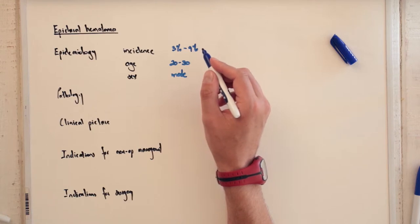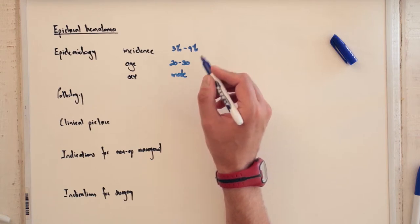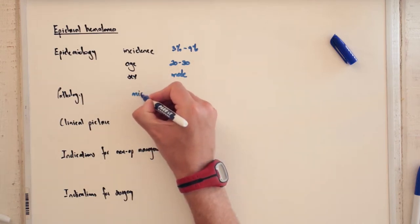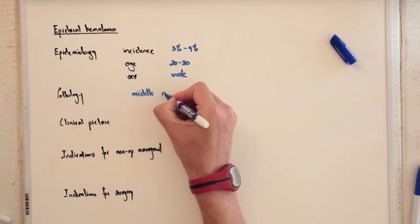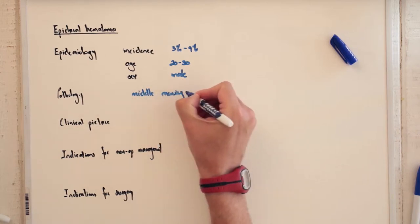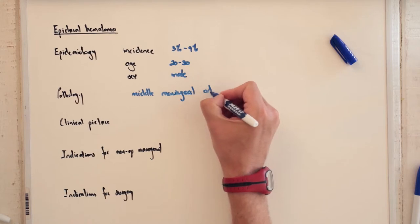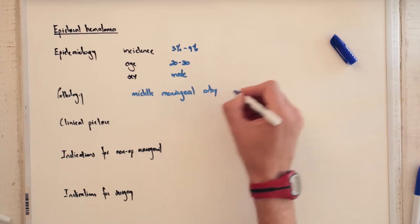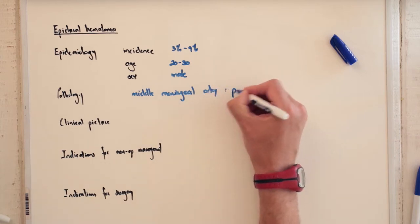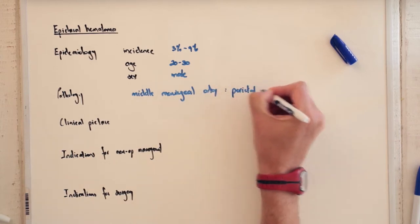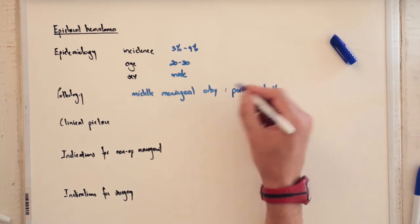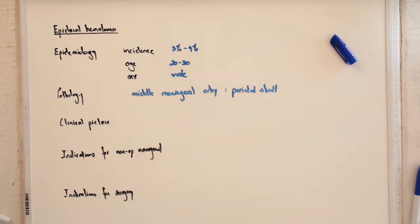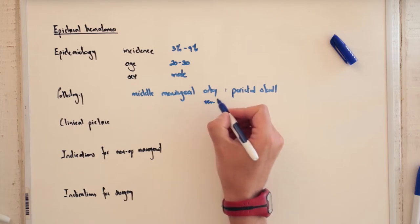What is the actual pathology? Well that is usually injury to the middle meningeal artery. It would be with an overlying parietal skull fracture, because that is indeed where this artery runs.